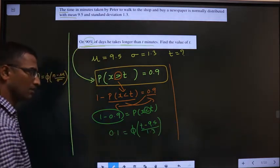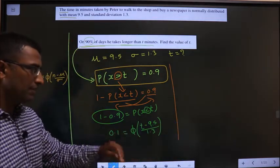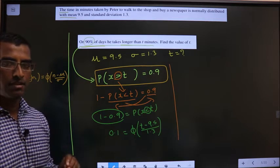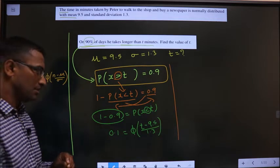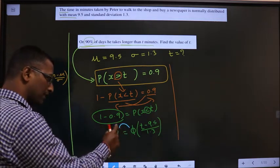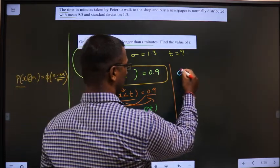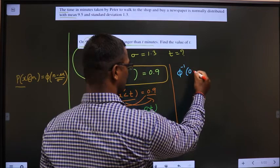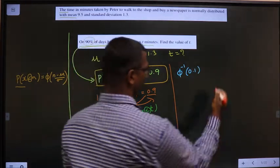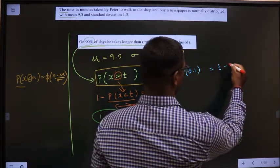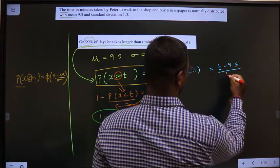Okay. Now, we should simplify to get the value of T. Now, in simplifying, step 1 is shift the phi to the other side. So, we get phi inverse of 0.1 equal to T minus 9.5 by 1.3.